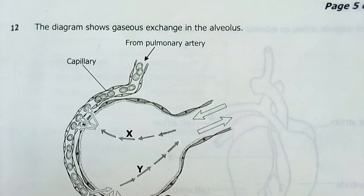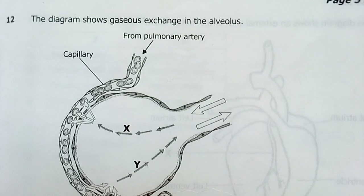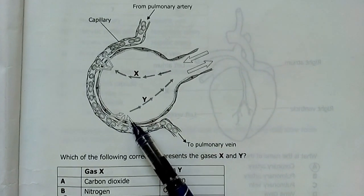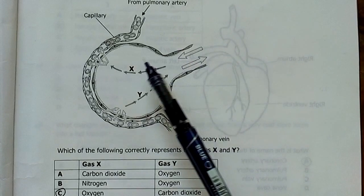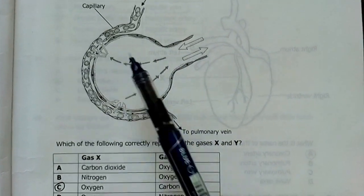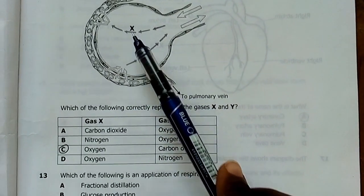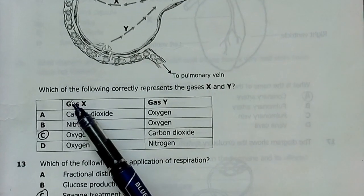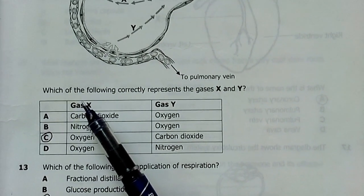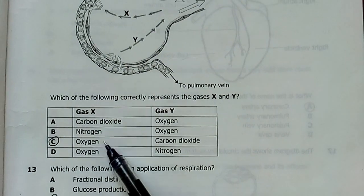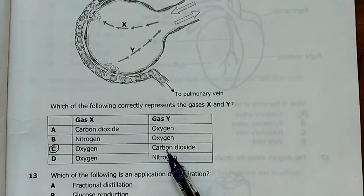Question 12. The diagram shows gaseous exchange in the alveolus. Usually, carbon dioxide diffuses out. Oxygen diffuses in. I'm able to tell this is oxygen that's carbon dioxide. Which of the following correctly represents the gas X and Y? X is oxygen, and Y is carbon dioxide. C.